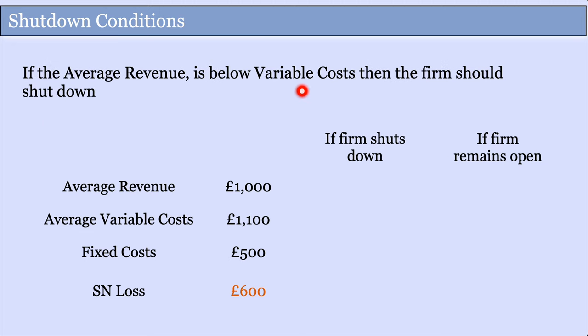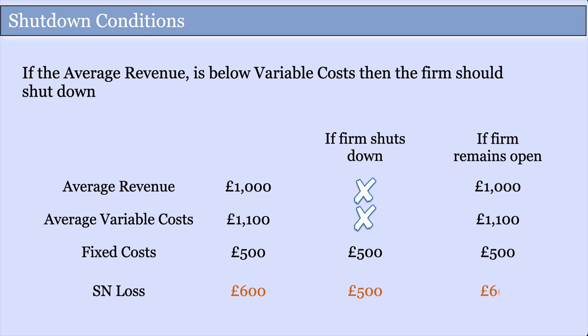But what if average revenue is below your variable costs? If average revenue is £1,000 and variable costs are £1,100, you're already making a loss, and with another £500 of fixed costs, you're losing £600 in total. However, if the firm shuts down, you still have to pay the £500 fixed costs — so you'd only lose £500. Since remaining open costs £600, you should shut down in this case.